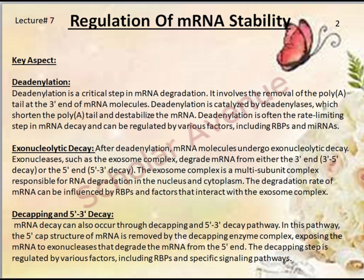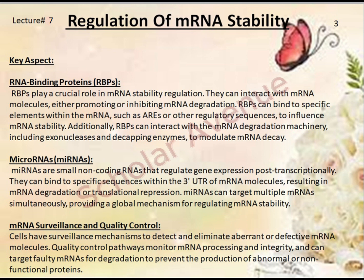Fourth is decapping and 5'→3' decay. mRNA decay can also occur through the decapping and 5'→3' decay pathway. In this pathway, the five-prime cap structure of mRNA is removed by the decapping enzyme complex, exposing the mRNA to exonucleases that degrade the mRNA from the five-prime end. The decapping step is regulated by various factors including RBPs and specific signaling pathways.